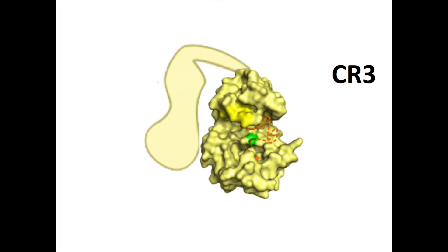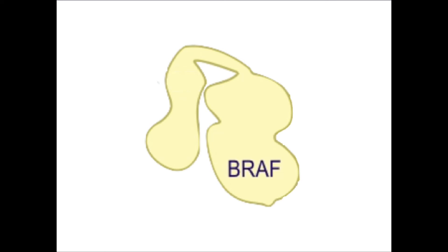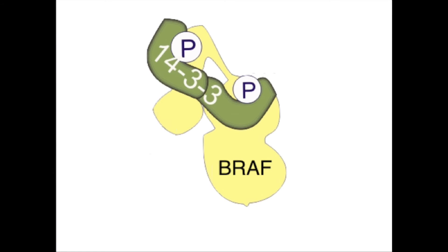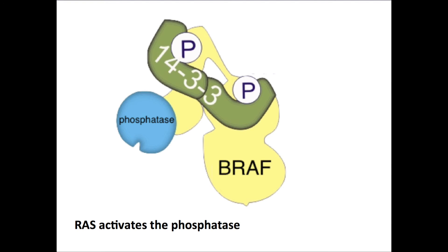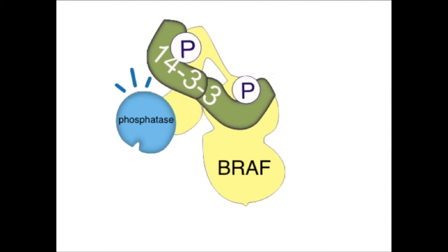Now let's look at how BRAF gets activated. The first thing that needs to happen is a removal of the protein 14-3-3. In order for this to happen, a phosphatase needs to be activated by an active RAS. The activated phosphatase removes a phosphate group of one side of the 14-3-3 protein, thereby freeing CR2.